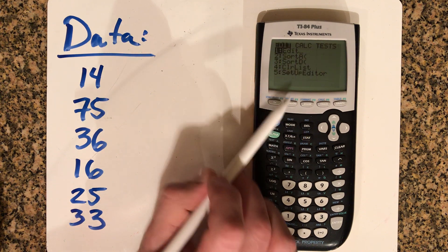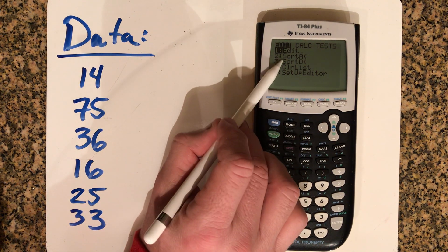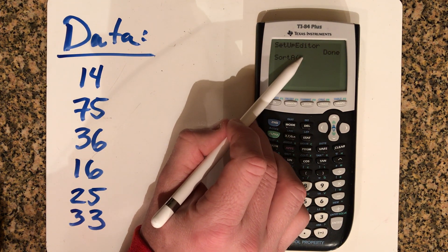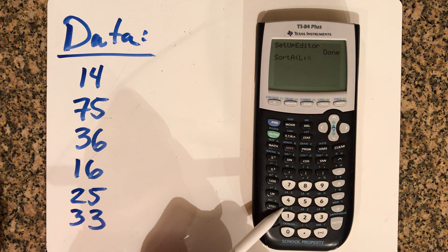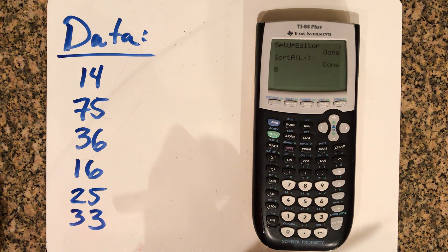So when you press the stat key, I want to sort this data for this set of data by pressing option number two. And then I'm going to put in L1 as the list I'm going to try to sort. So press second one. You'll see it says L1 right above the key here. And then close the parentheses if you need to. Hit enter.